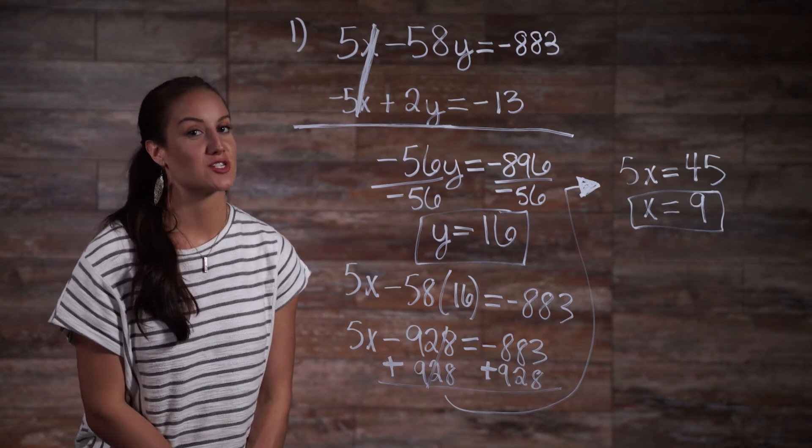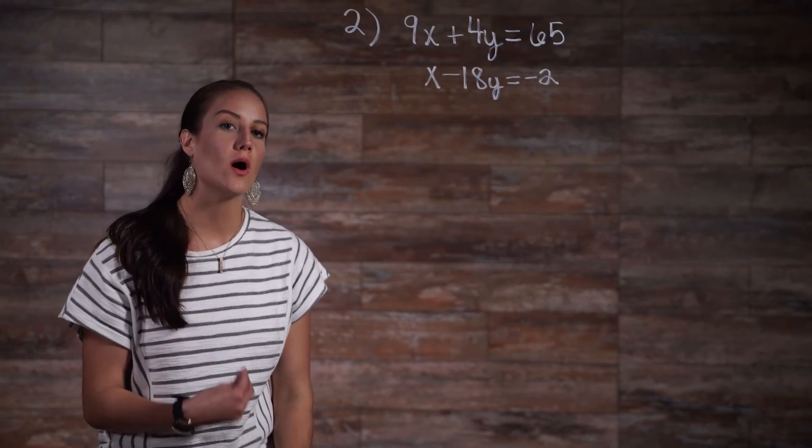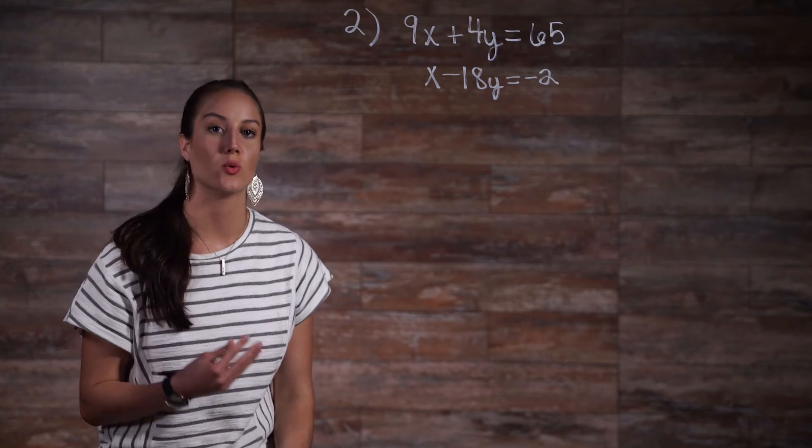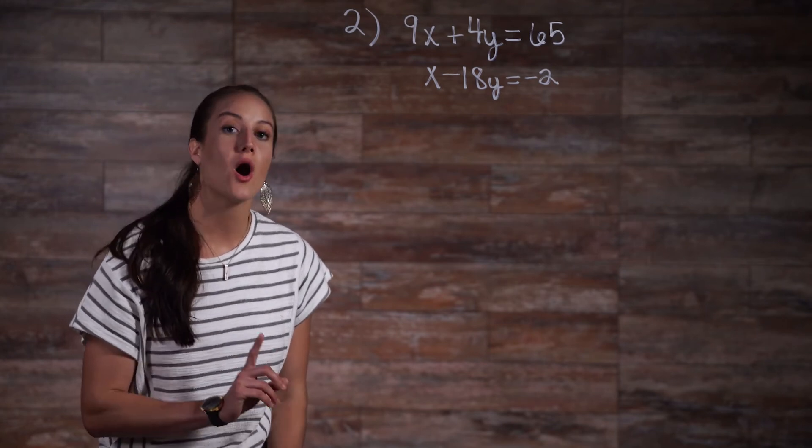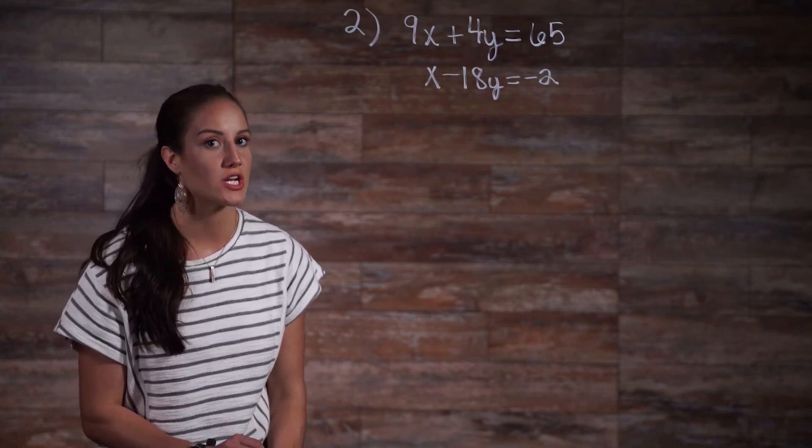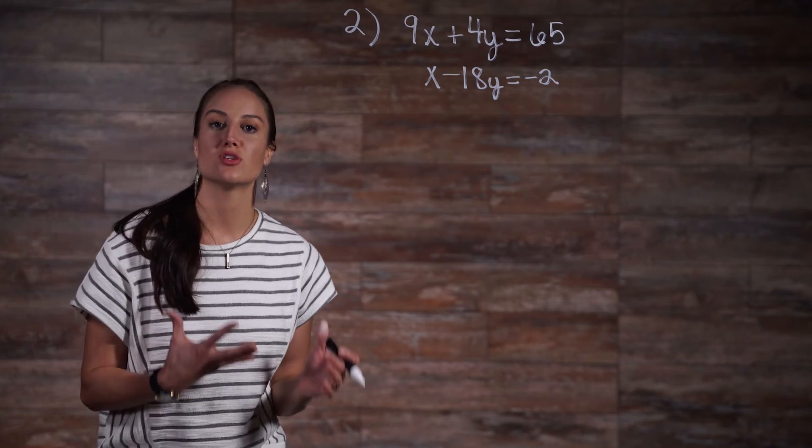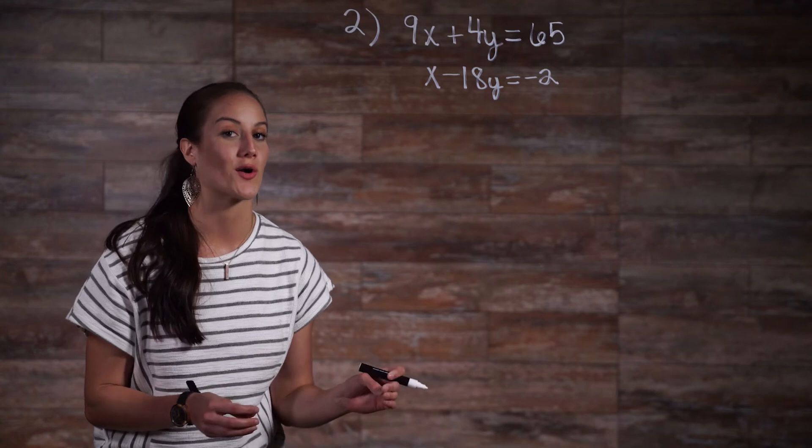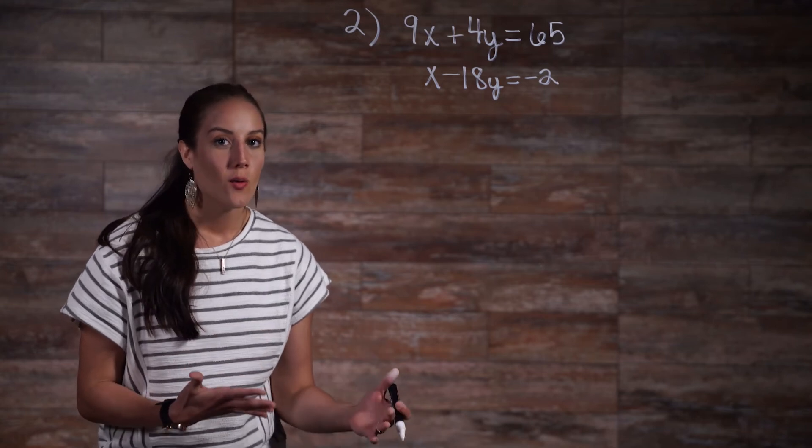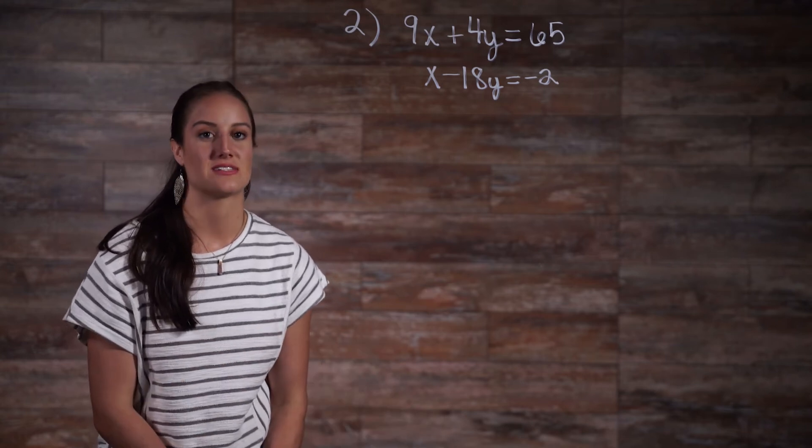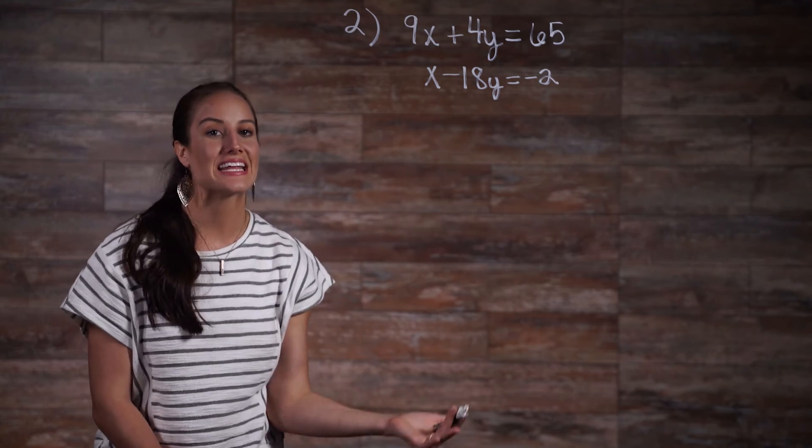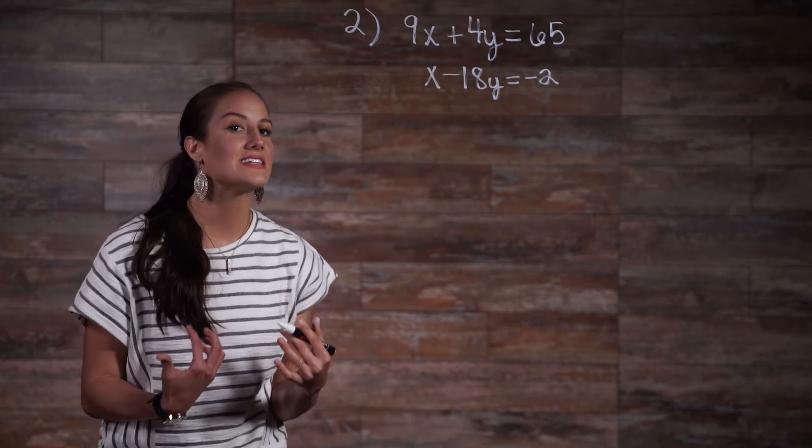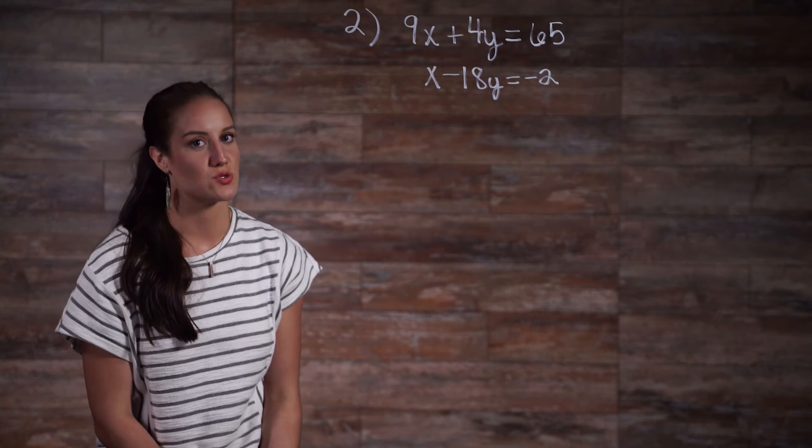Let's move on to system number 2. Let's think back on what we said in our explanation on when to use each method. Recall what was said about substitution: You should use the substitution method when one of the variables in one of your equations has already been isolated. Well, such is the case with this system. Our x variable in our second equation has a coefficient of 1. So, let's solve this system using substitution.